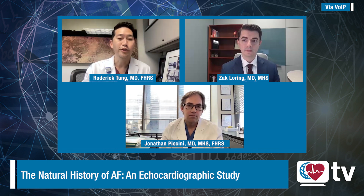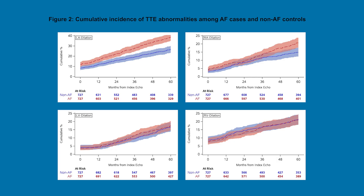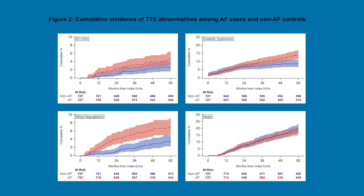We can take us through figure two, which nicely graphically summarizes your findings. Figure two is a Kaplan-Meier style curve demonstrating the incidence of key echocardiographic findings. The top row shows left atrial and right atrial dilation, with more pronounced divergence in left atrial volumes. The next section looks at ventricular chamber sizes, which were not substantially different between cohorts. The third row shows incidences of systolic dysfunction — earlier separation of curves and relatively low incidence — and diastolic dysfunction with later separation and higher incidence. There's a marked, probably the most dramatic, separation in mitral regurgitation incidence. Finally, all-cause mortality was not substantially different between populations during follow-up.